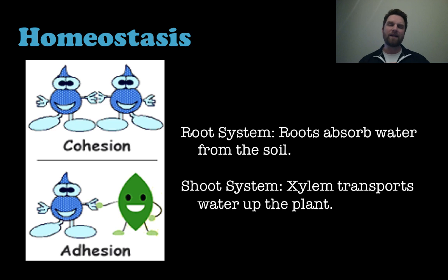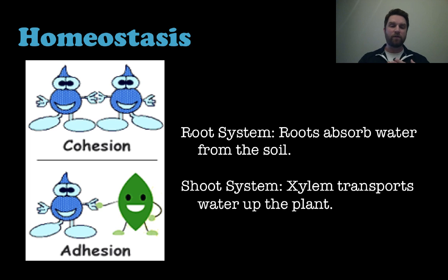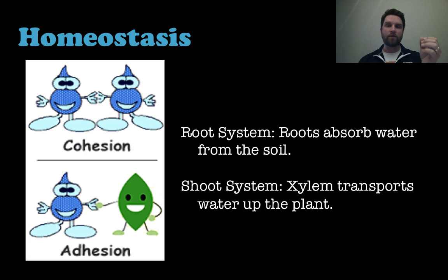The root system absorbs the water from the soil, and the shoot system uses the xylem to transport water up the plant. The reason water can work against gravity and go up a plant is because of two properties called cohesion and adhesion. Cohesion is the ability of water molecules to stick to each other, and adhesion means water molecules will stick to the surface of other materials. For example, if you put two drops of water close together they'll come together quickly, or you can see droplets hanging from a surface before falling — that's adhesion.